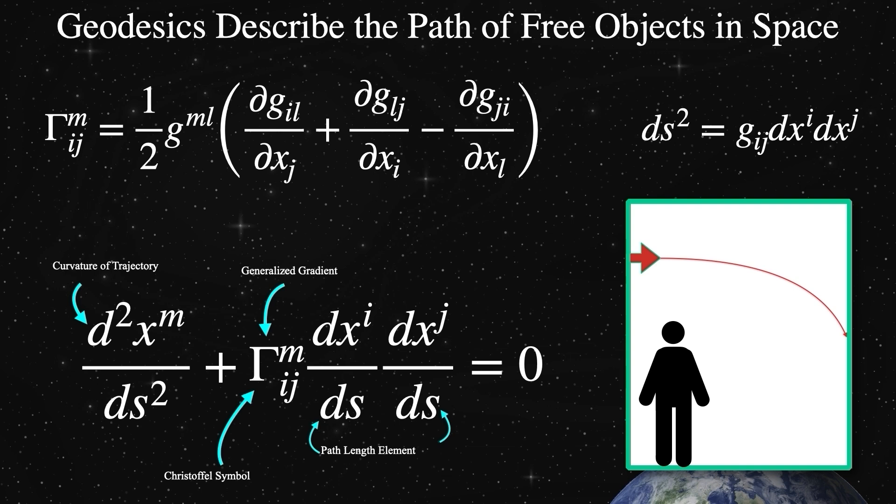But why does this thing exist? This gamma? This Christoffel symbol? What's its use? On the bottom is the geodesic equation. This equation shows how each coordinate, dx^m, changes as you step a little distance, ds. The Christoffel symbol tells us the gradient of the space at a given point for each coordinate. As you traverse some small path length element, going on the shortest path, the gradient describes the path's curvature. Again, the metric contains all the facts about the space at each point, and the Christoffel symbol relates those facts to the shortest trajectory in that space, called the geodesic. The red line in the box is due to a gravitational field. That path is determined by the geodesic equation.